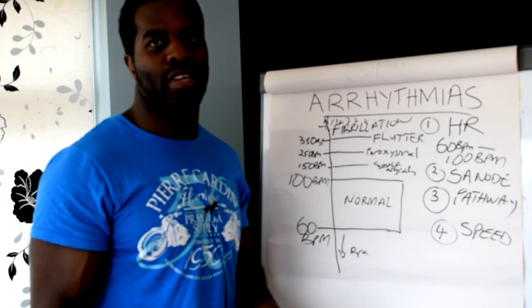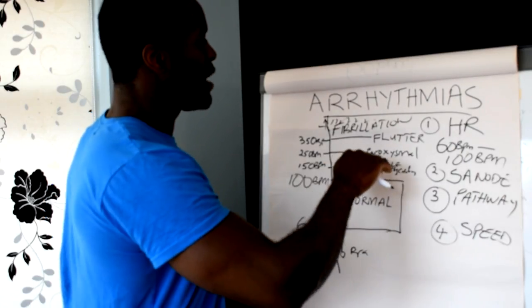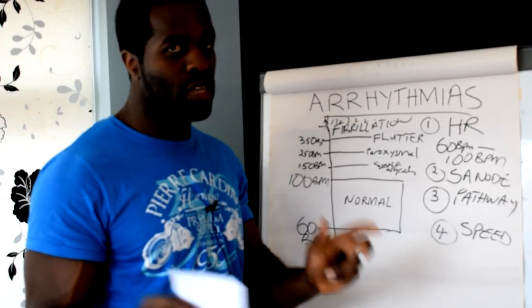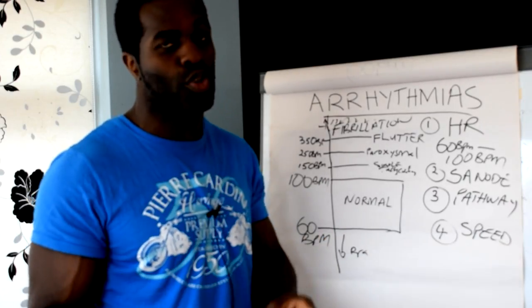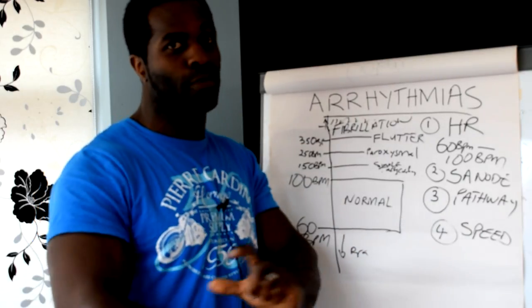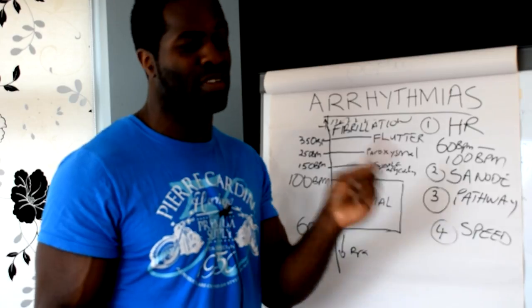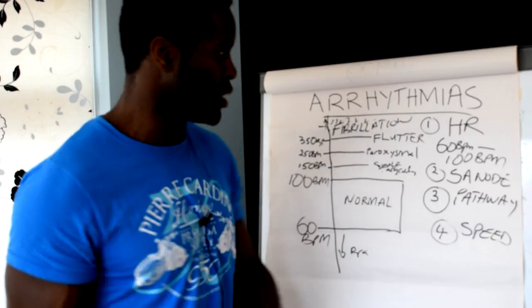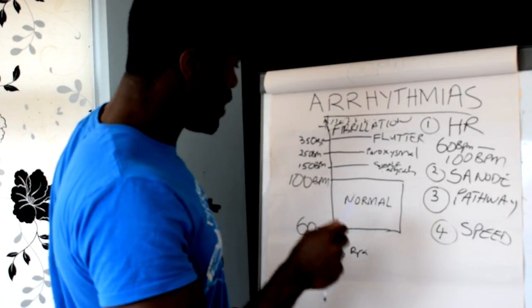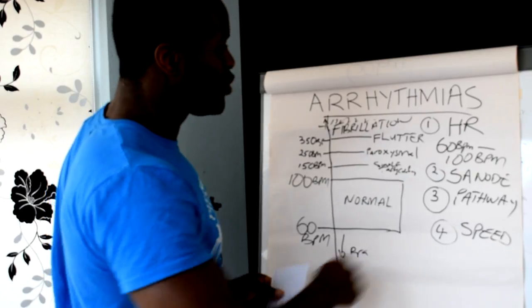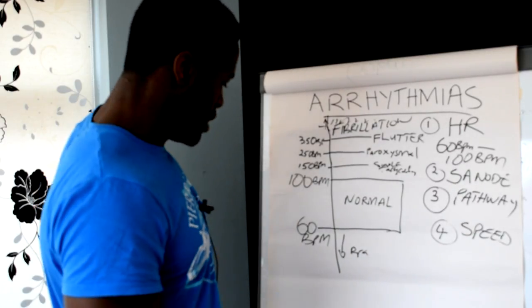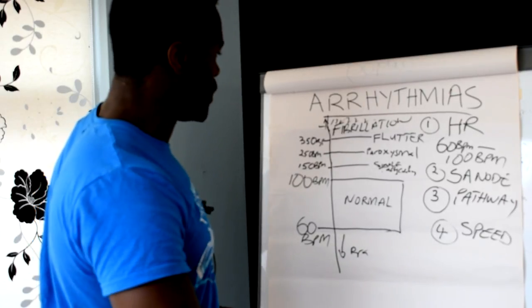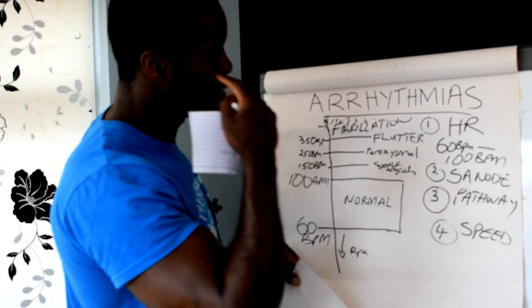Now just knowing these terms should start making sense — you can distinguish between a flutter, a paroxysmal tachycardia, and a fibrillation. We've got our 4 criteria and defined the different rhythm types based on beats per minute. Now I want to explain the 4 criteria further. To do that, I'm going to go to the next page and draw a diagram of the heart.